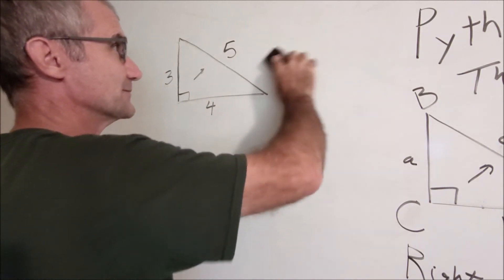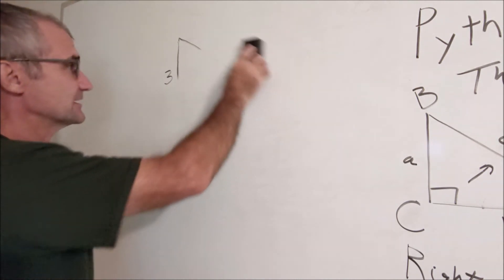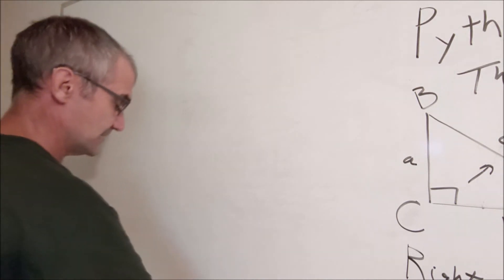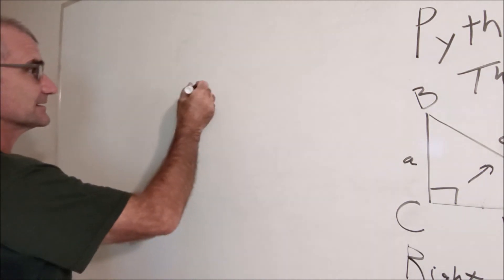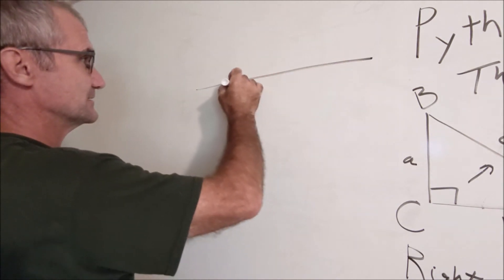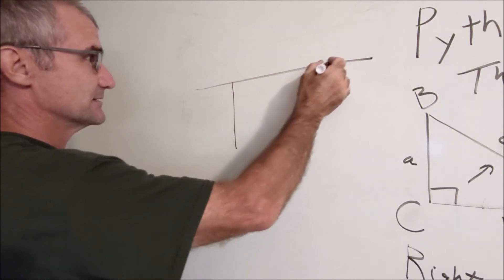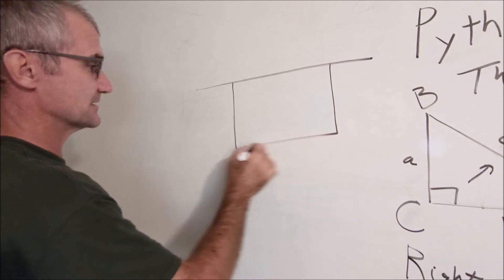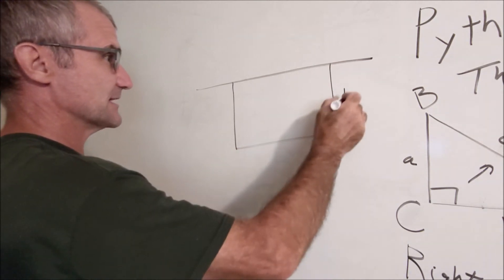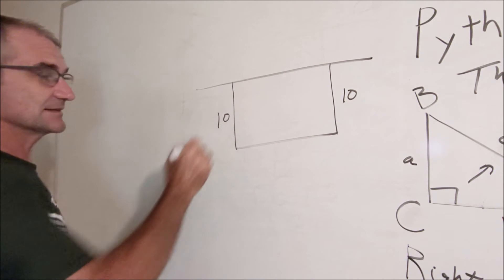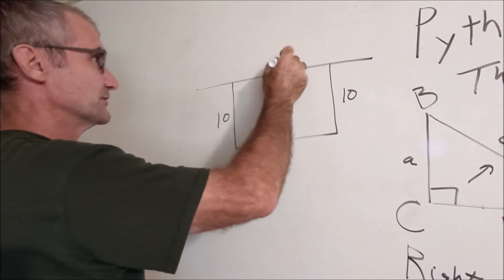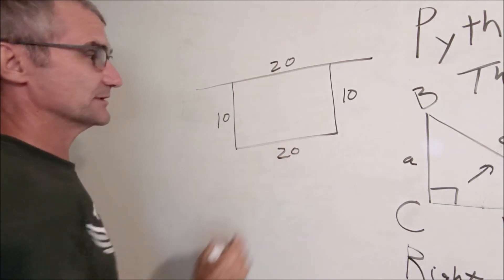Out back I'm building a deck. I'll take you out there and show you that deck in a second, and what I want to make sure on that deck is I want it to be square to the house. So the deck's going to look like that. I cut this board exactly 10 foot, this board exactly 10 foot, this board 20 foot, and then this board 20 foot.